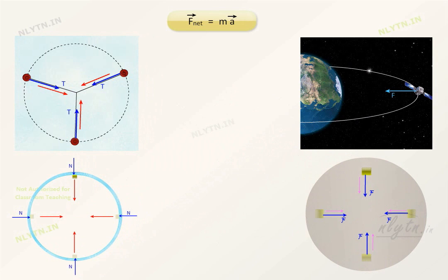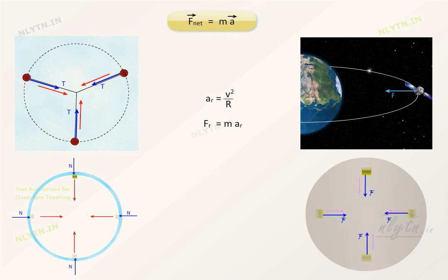If a particle has mass m and is moving with speed v, then in all cases the centripetal acceleration of the particle will be equal to v² / r, where r is the radius of the circle. And from Newton's second law, the centripetal force will be equal to the mass of the particle times its acceleration. So the centripetal force on an object of mass m moving in a circle of radius r with uniform speed v is equal to mv² / r.